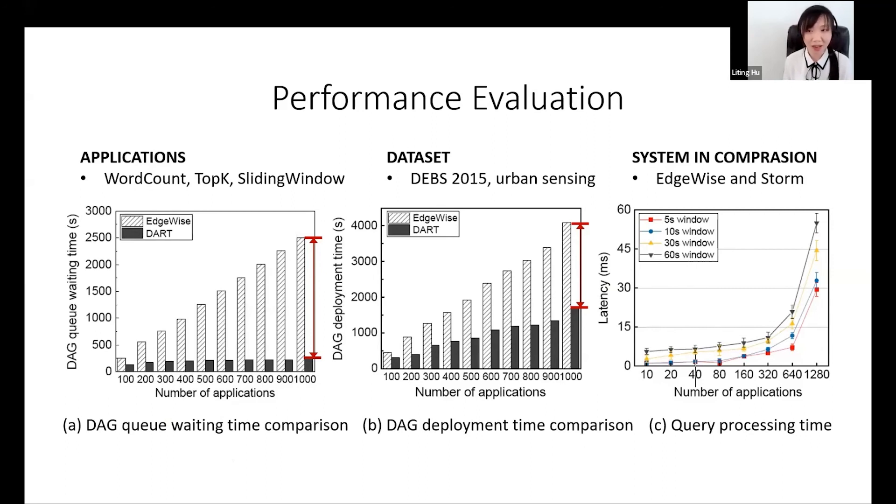This is because, unlike EdgeWise and Storm, they both use centralized architecture. Their queue time and deployment time increase linearly as the number of applications increases. In contrast, DART avoids scalability bottleneck because DART's decentralized architecture does not rely on any centralized master to deploy applications.